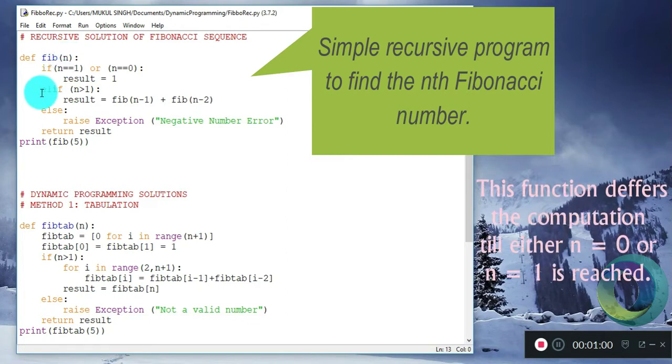Now we initialize the base cases. When n equals 1 or n equals 0, we know that the result would be 1, because the 0th and the first Fibonacci number is 1.